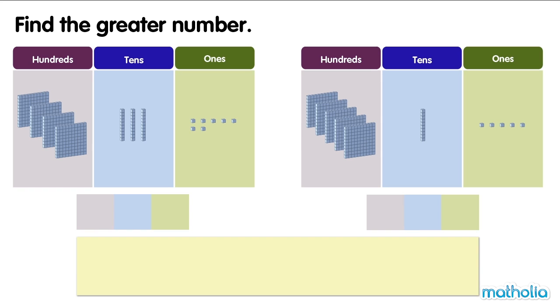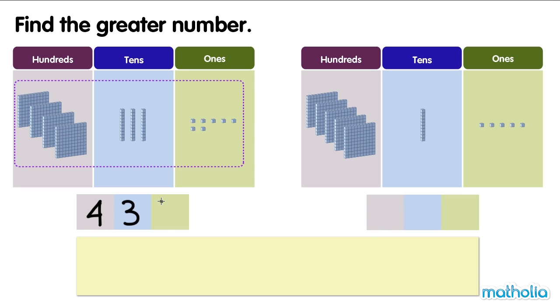Find the greater number. In this set, there are four hundreds, three tens, and seven ones. There are four hundred and thirty-seven blocks.